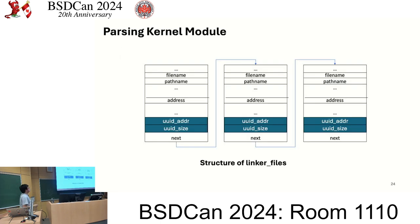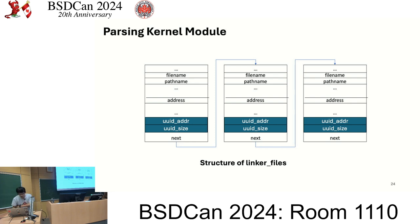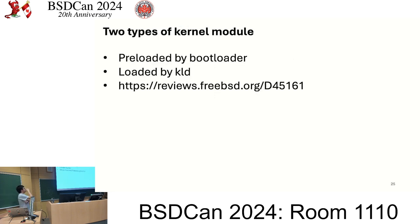To implement this I expose two new members in the linker file structure: 'uid_addr' and 'uid_size'. The size is needed because build IDs may have different versions, so we need to correctly parse the UID information. There are two types of kernel modules: one preloaded by the bootloader, and one loaded by KLD. We have to handle these two cases separately.